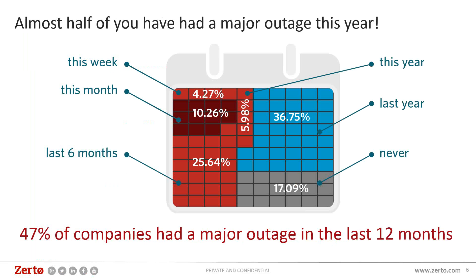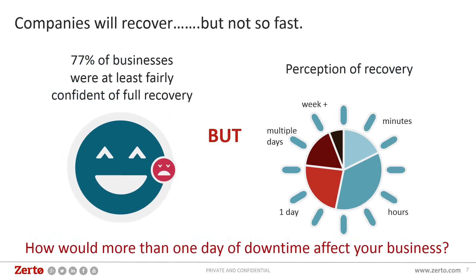One thing we hear is people saying they don't get disasters that often. But from our survey, we found that half of people had to use their DR in some way. Forty percent of companies had a major outage in the last 12 months. And while 77% of businesses were at least fairly confident they could recover, when you look at recovery taking one day, multiple days, or a week or more, the perception of recovery time doesn't match reality. People think they can be up and running in an hour, but what that actually looks like is quite different.